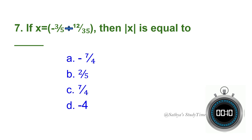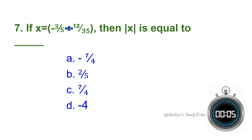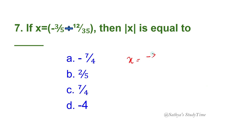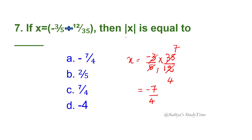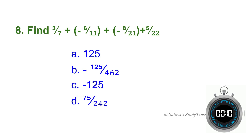Seventh question: If x = (minus 3/5) ÷ (12/35), then |x| equals? We compute: minus 3/5 × 35/12 — when division is present, write the reciprocal. Cancelling gives minus 7/4. Since modulus removes the sign, the answer is 7/4.